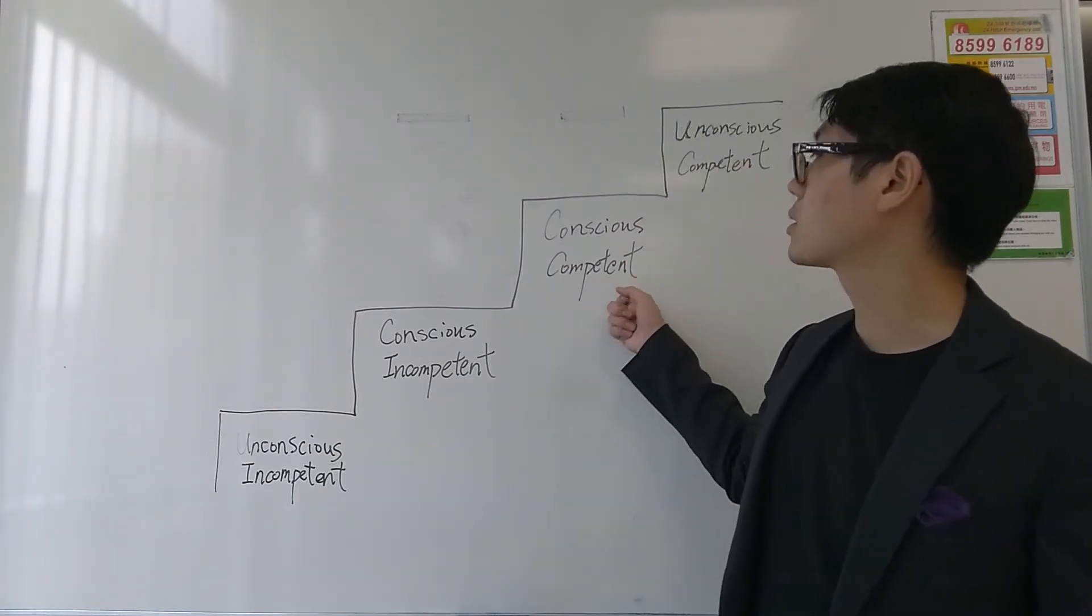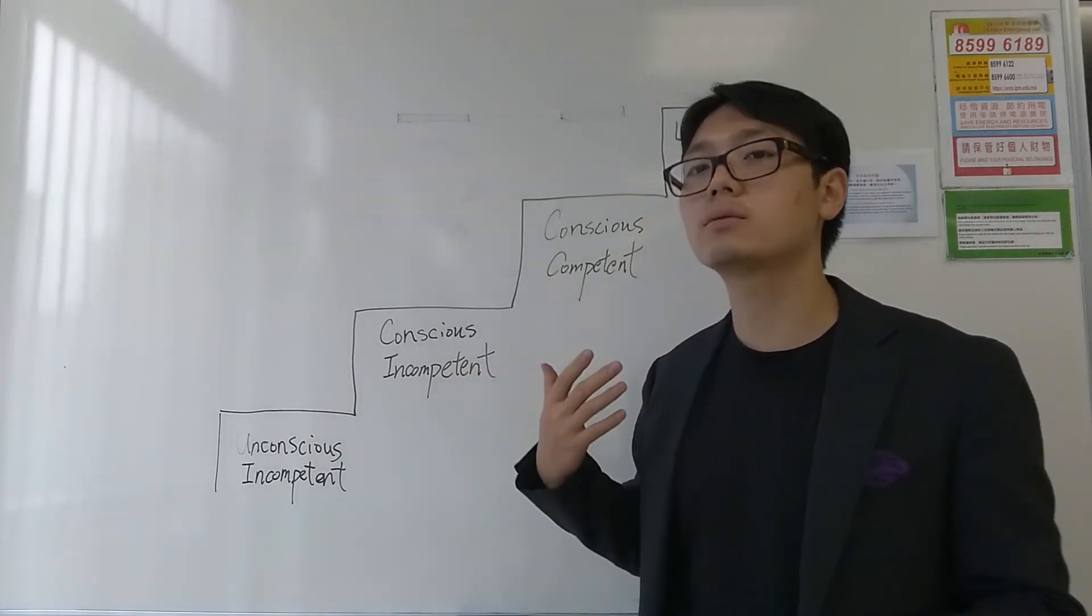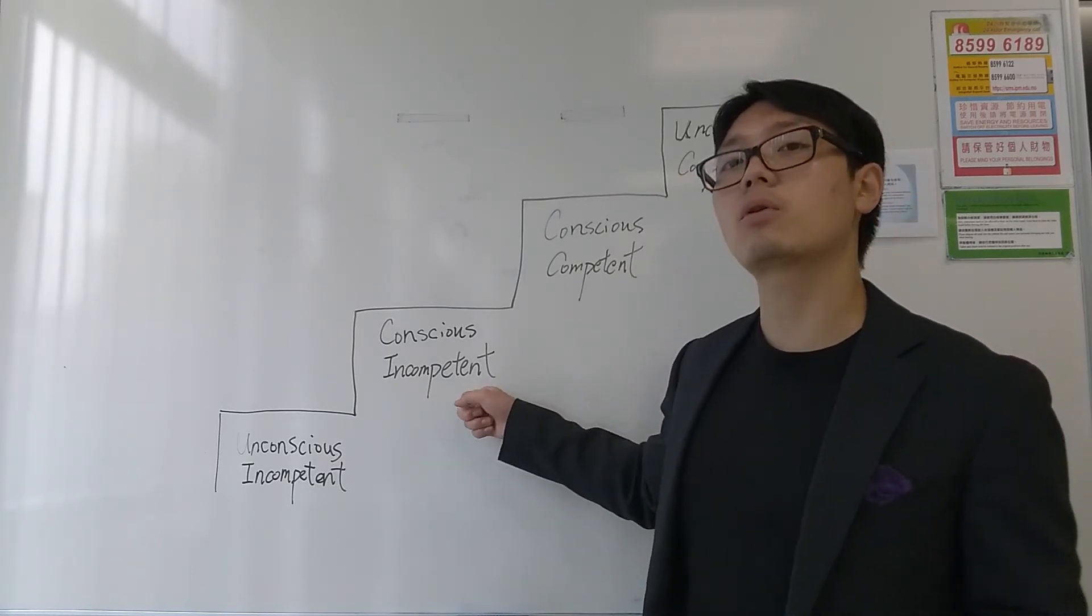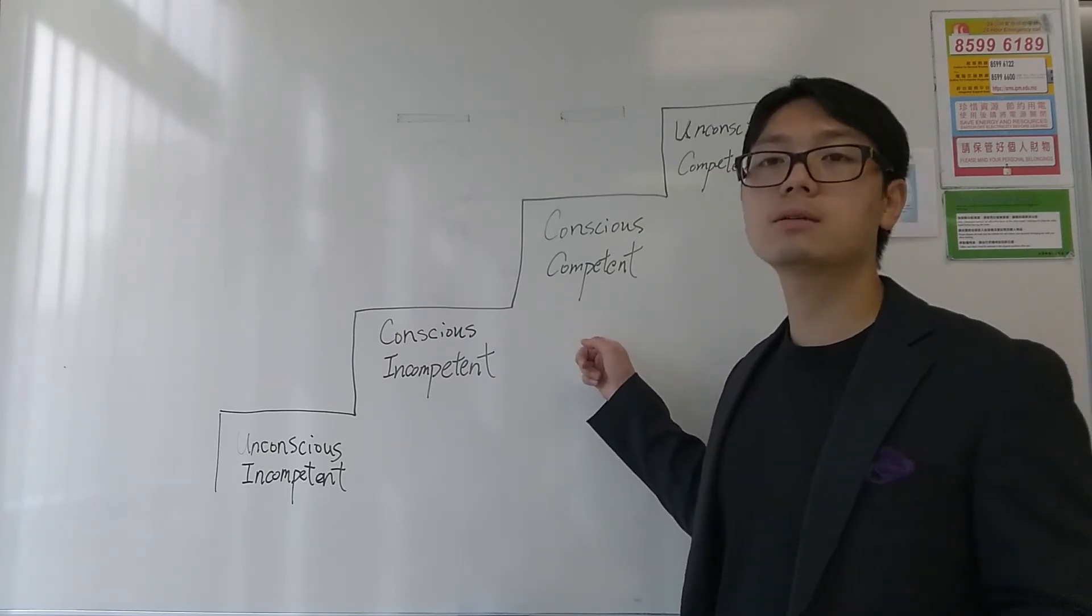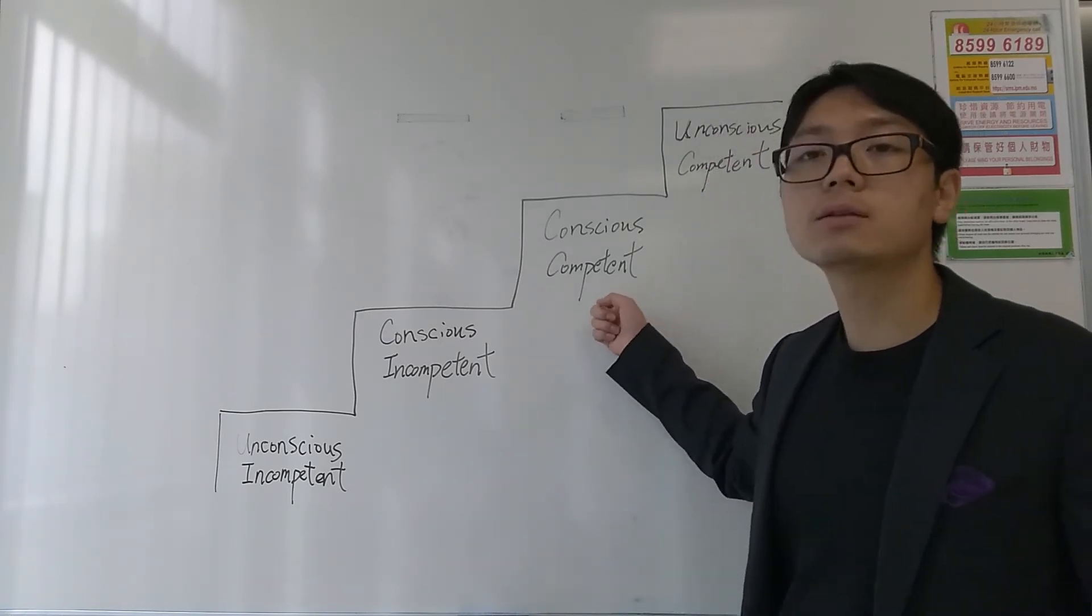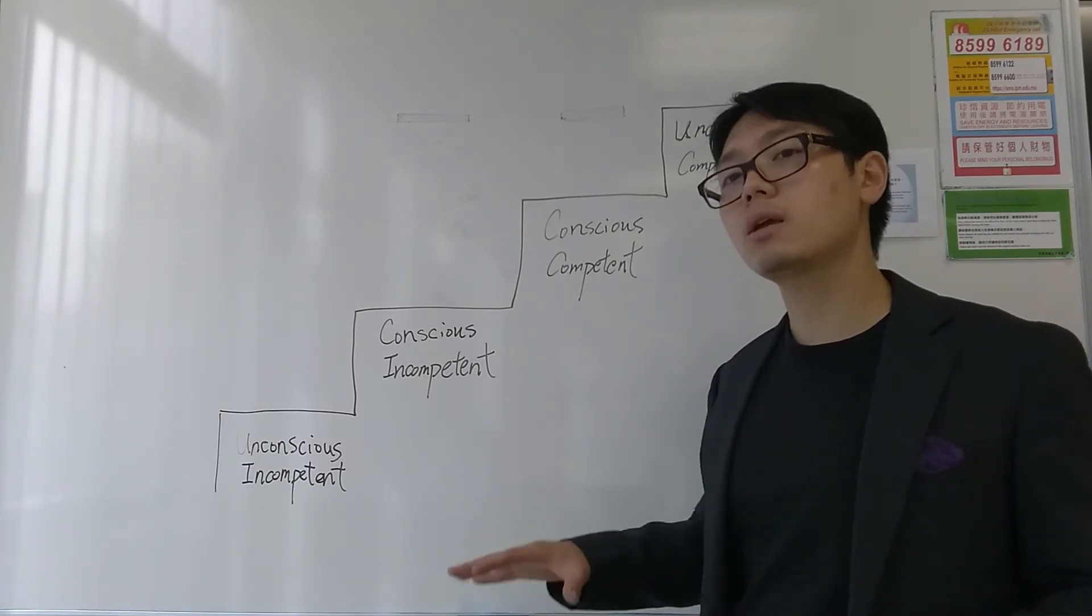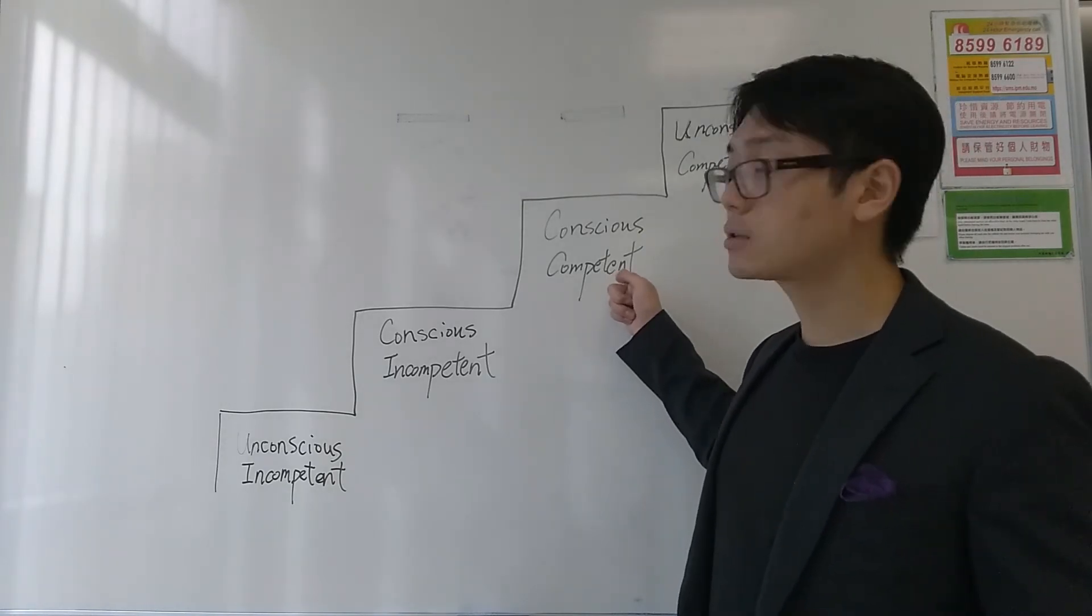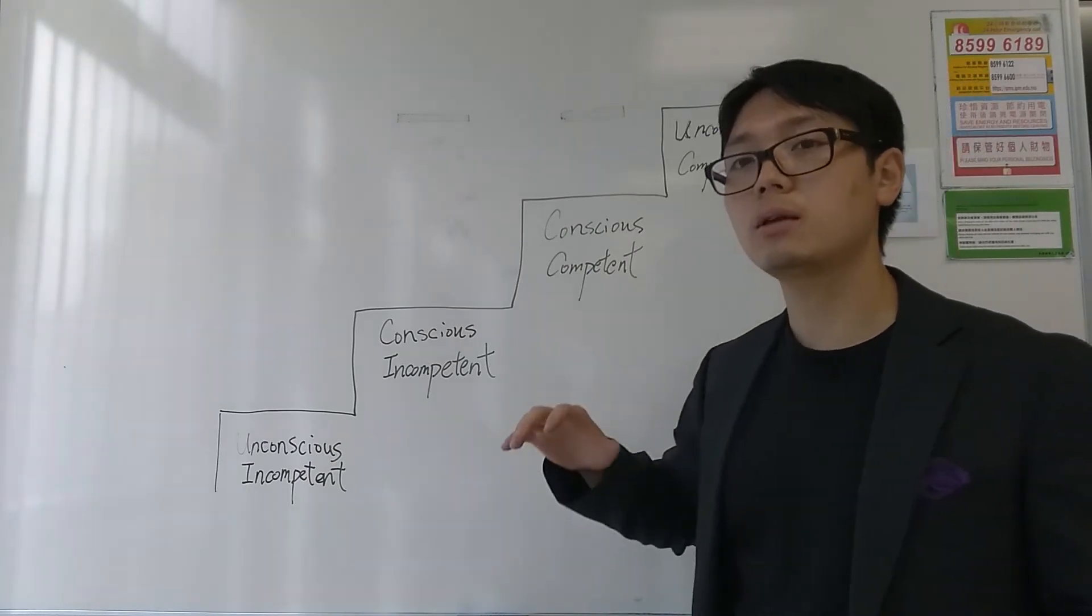The third stage is conscious competence. This is the stage where you have to try to learn slowly. Imagine the same person goes to driving school, slowly picks up all the lessons, and gets behind the wheel to learn like a student driver. At this stage, this person will still have to learn slowly and be careful, and it's expected that he or she will stay at this stage for quite a few years to grow gradually and improve their skill sets.